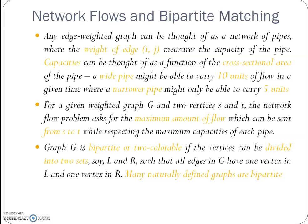Next concept is network flow and bipartite matching. So any edge weighted graph can be thought of as a network of pipes, where the weight of the edge IJ measures the capacity of the pipe. So here the capacity in the sense of how much values and how much data is going to flow across the pipe or across the network. So here the cross-section area of the pipe, a wide pipe might carry 10 units of flow in a given time, whereas a narrow pipe might be able to carry only 5 units. So the weighted graph G has two vertices S and T. So it is going to find out the maximum value that will flow from S to T that represents the maximum capacity of each pipe.